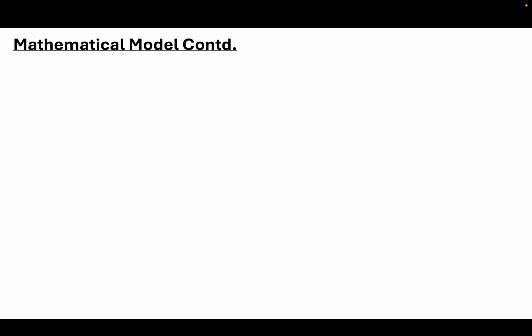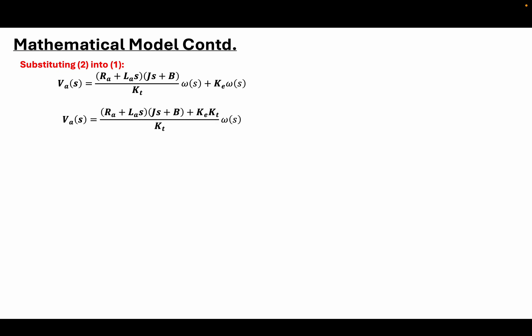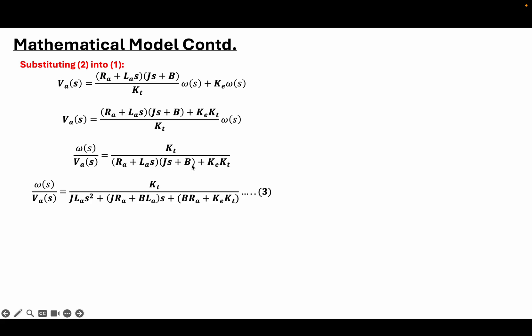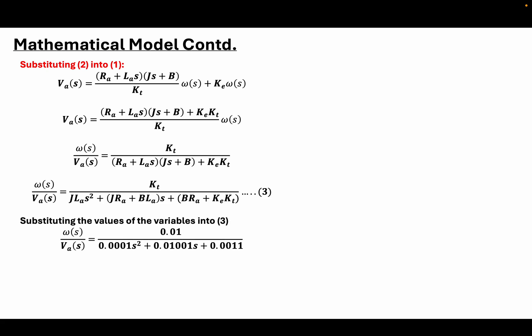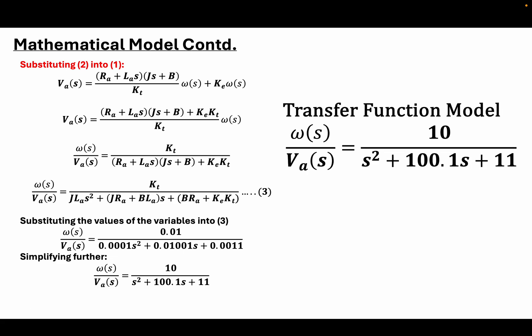We have Kt·I equal to Js·Ω plus b·Ω, and the armature current is reduced to a single equation. Substituting equation 2 into equation 1, we relate Va to motor speed Ω. Our transfer function is Ω over Va, and expanding we get our final transfer function model. Substituting the given parameter values and simplifying, this is the transfer function model of the motor we are going to use.